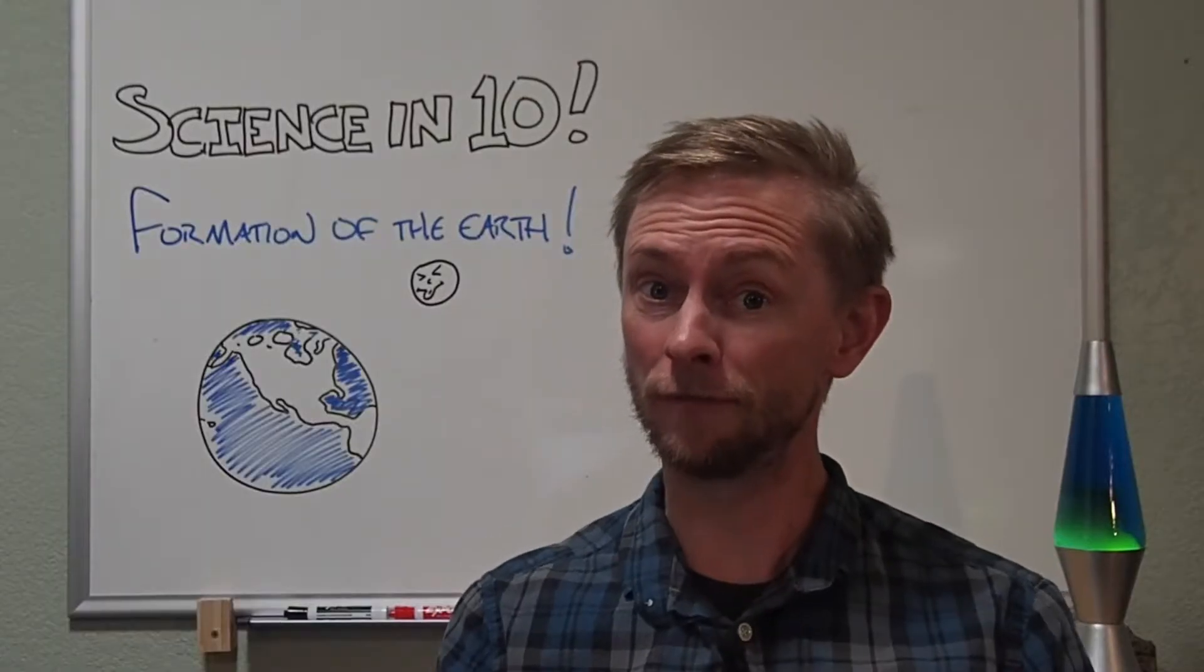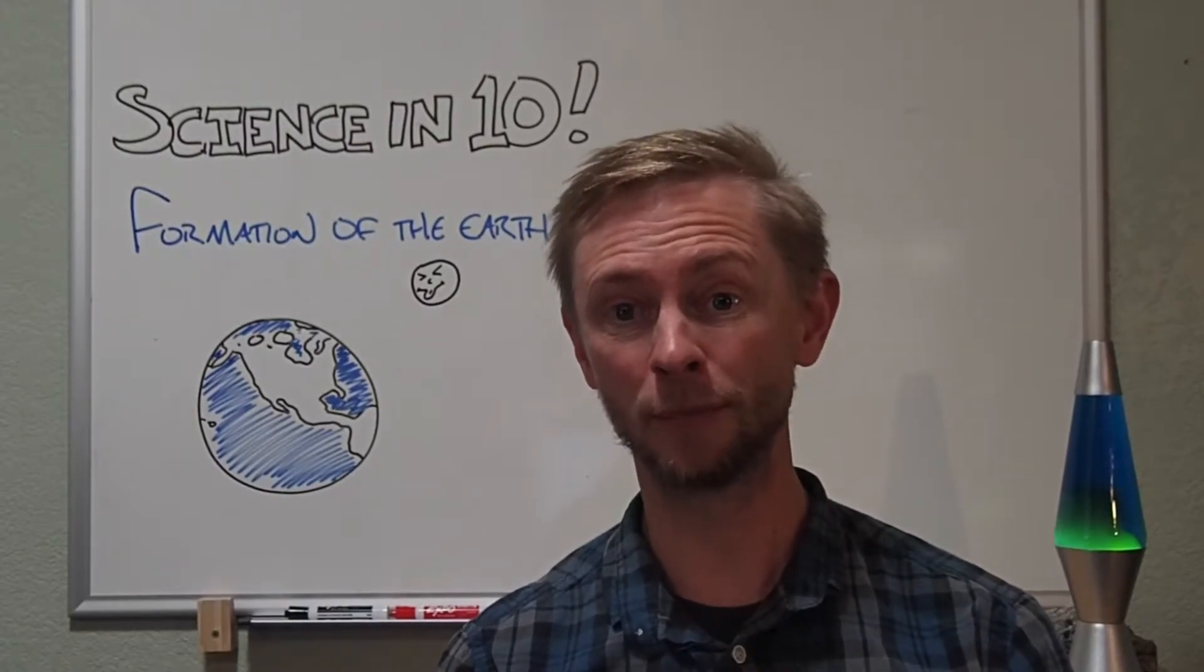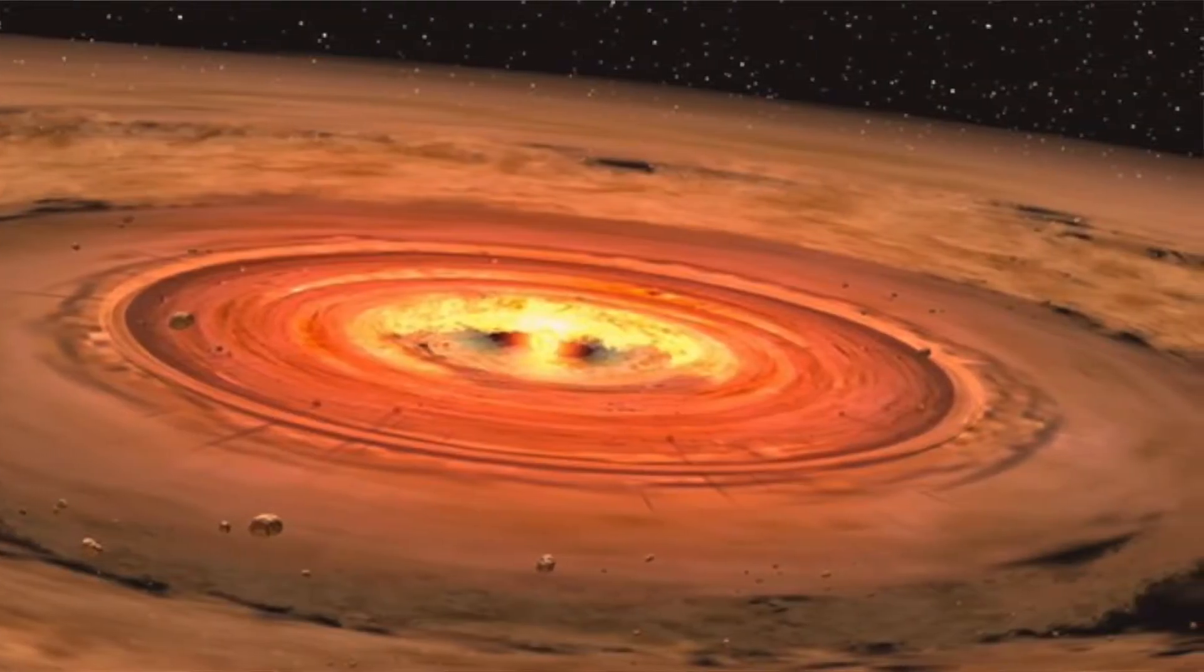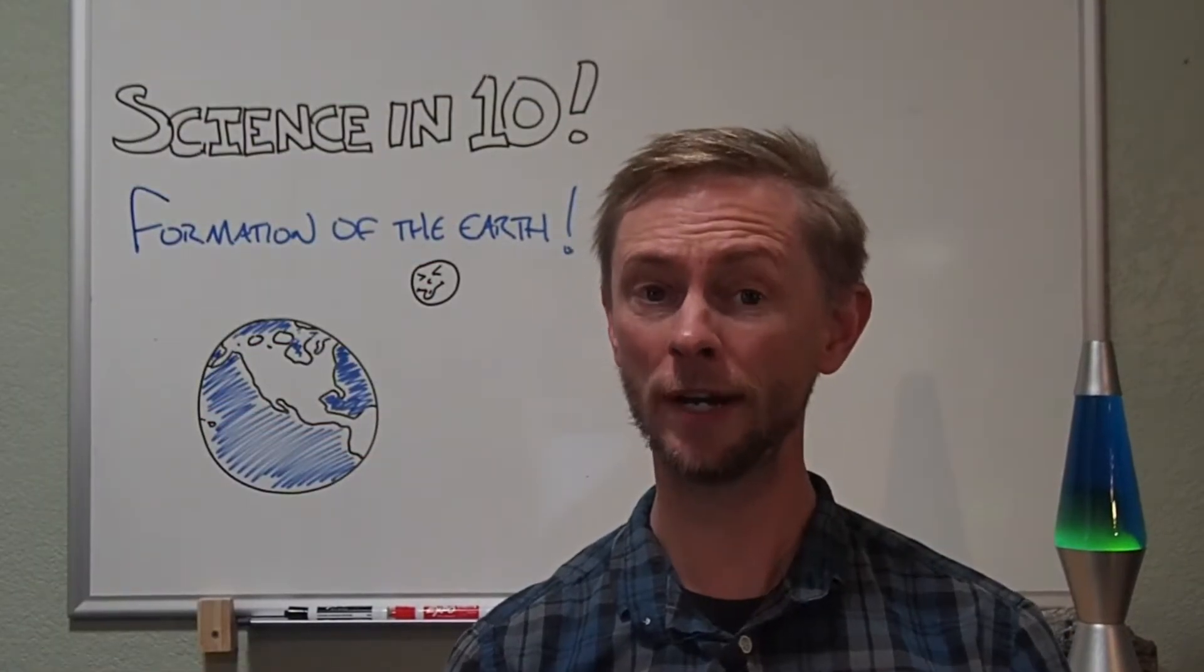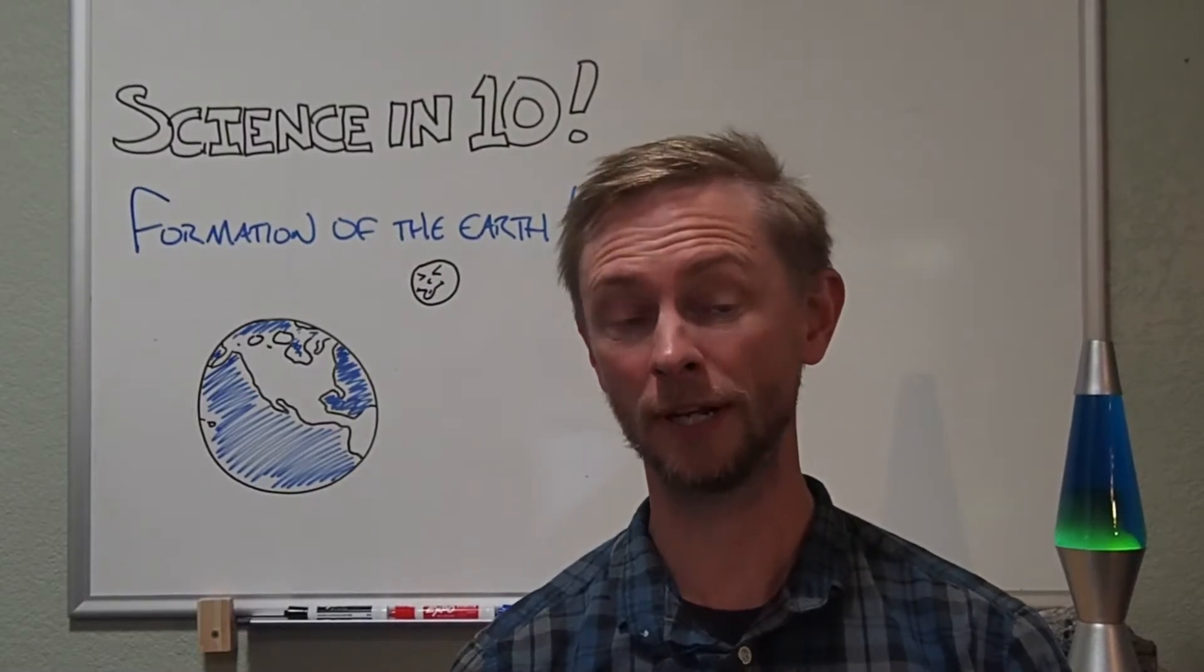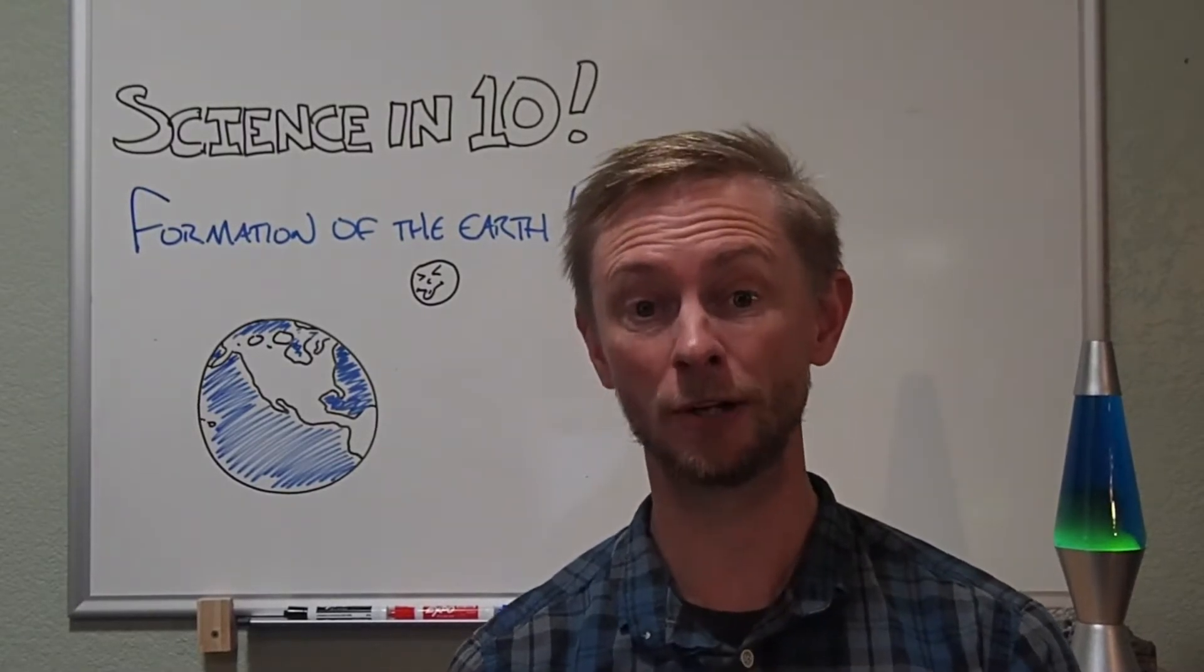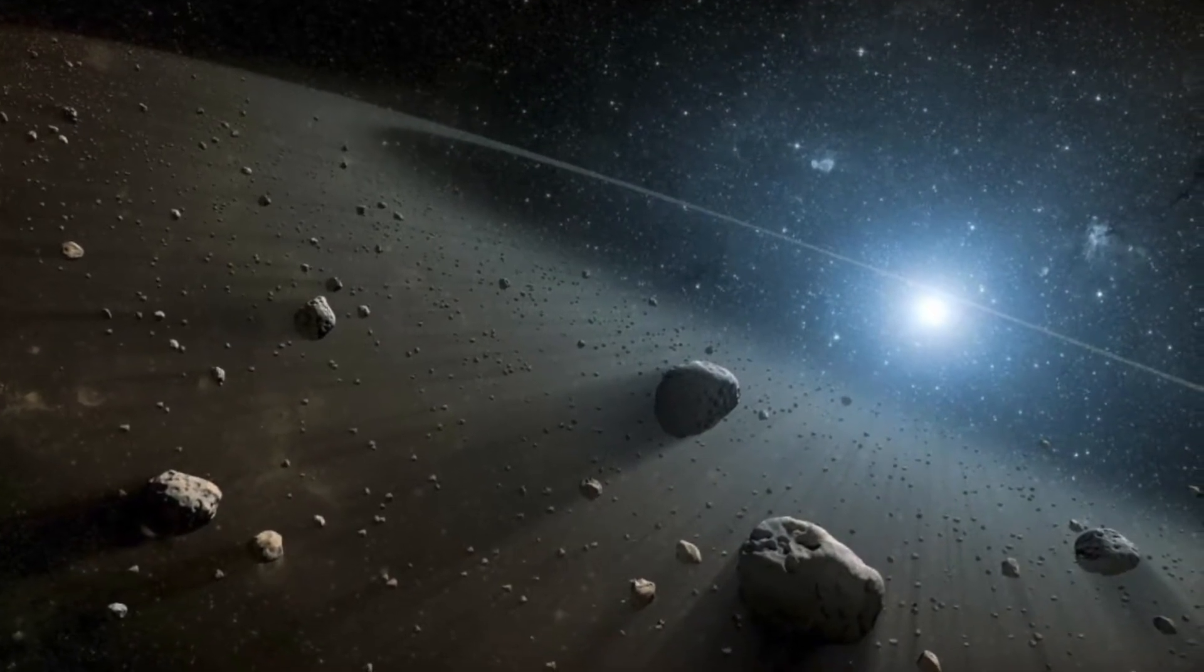Now that the Sun had formed, the period of gravitational contraction and heating of the nebula was waning, and the material left in the rotating disk began to cool. Heavier, metallic, and rocky dust was drawn inwards towards the Sun and began to accrete into asteroids and planetesimals, otherwise known as microplanets. Millions and millions of asteroids and planetesimals.